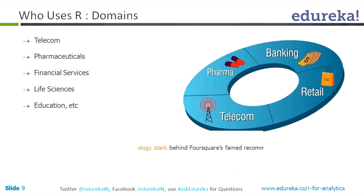Moving on to who uses R — you can see examples across industries: telecom, pharmaceutical, financial services, life sciences, and education are all using R. Recently I read that the healthcare industry is the best case for big data. These are basically data-rich industries, and if you are data-rich you need to use that data, otherwise you will lose your competitive edge. Other domains include law enforcement — the Los Angeles Police Department is using big data — and even the gaming industry is using data. IPL teams are being chosen using statistical models, and Bollywood is using data too — IBM came up with a formula for a hit Bollywood movie.